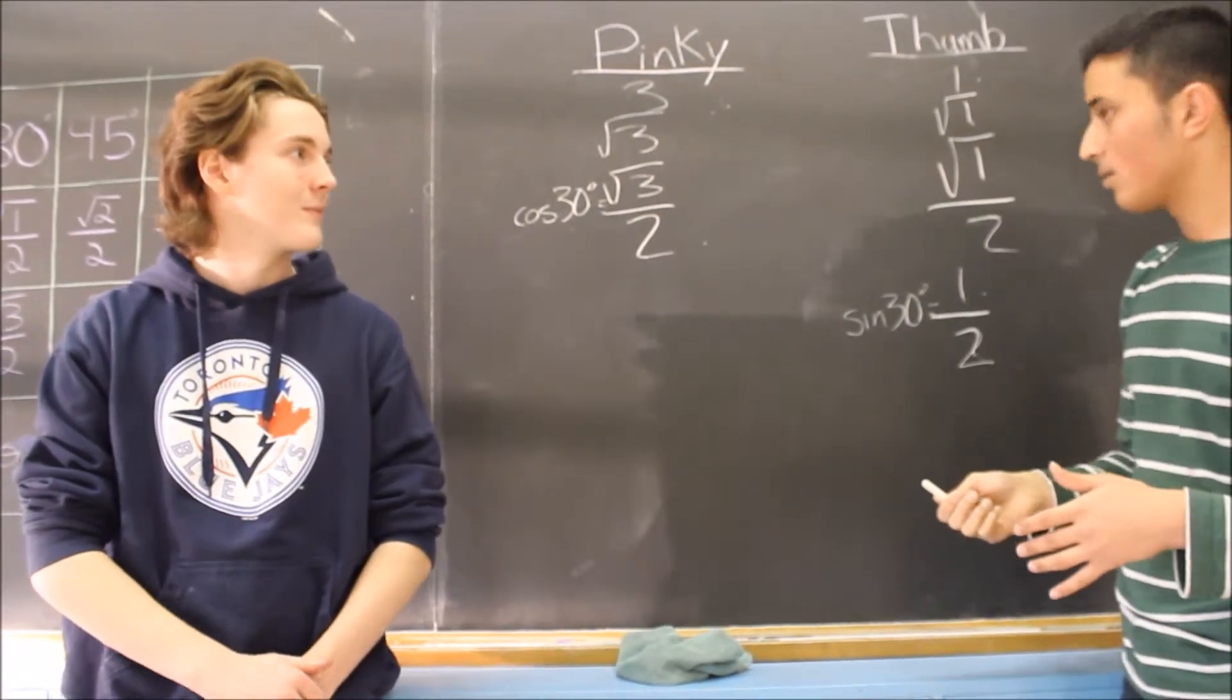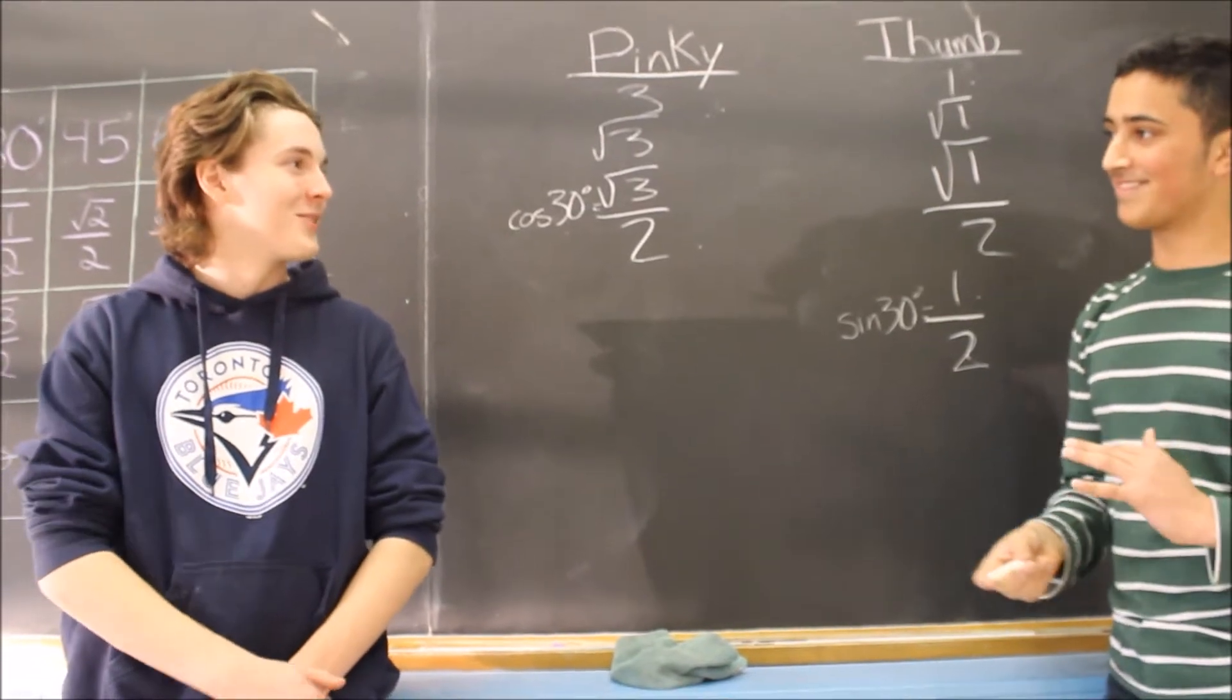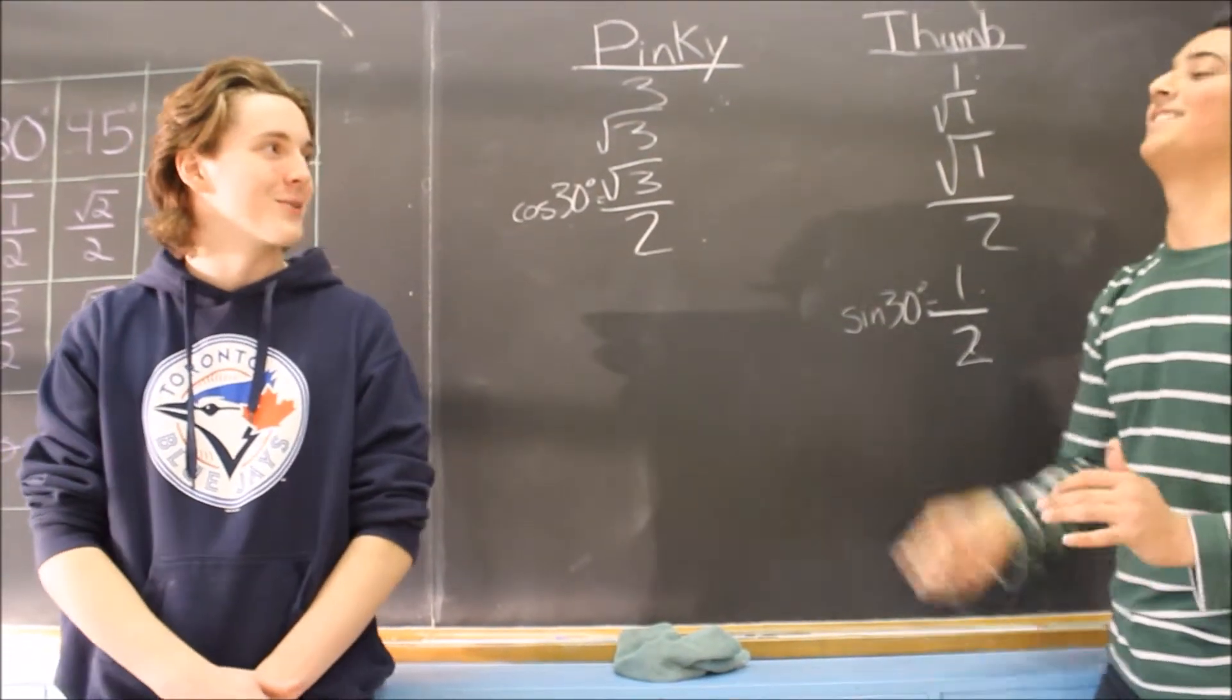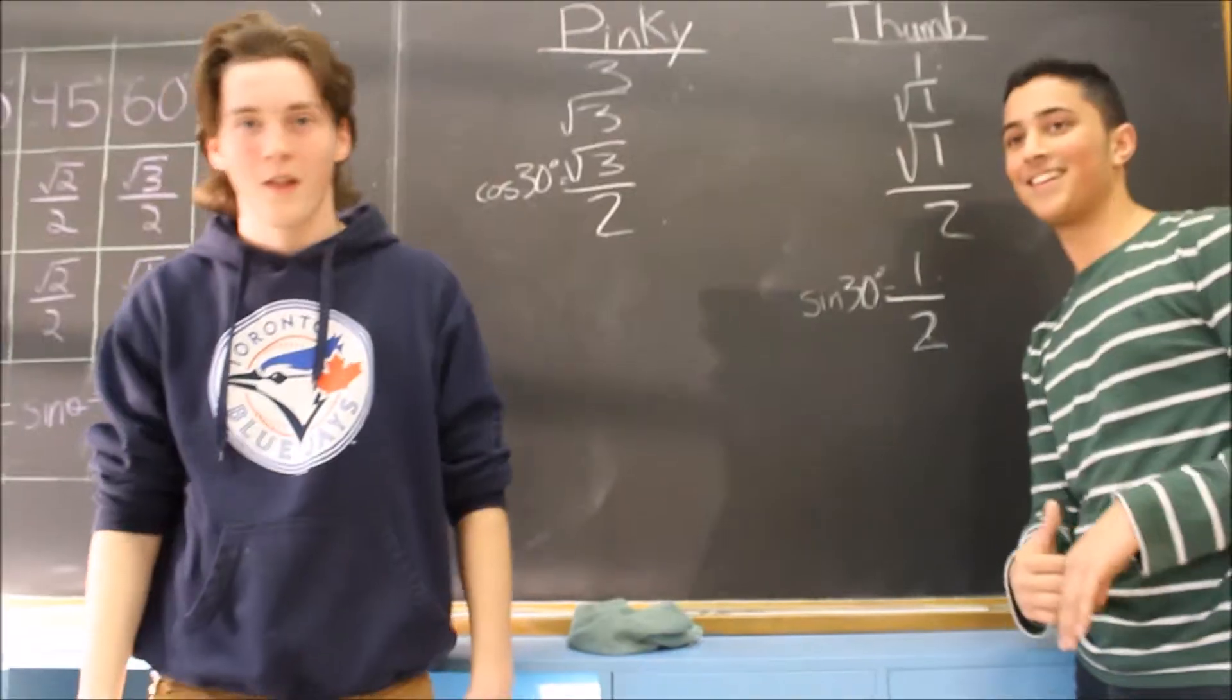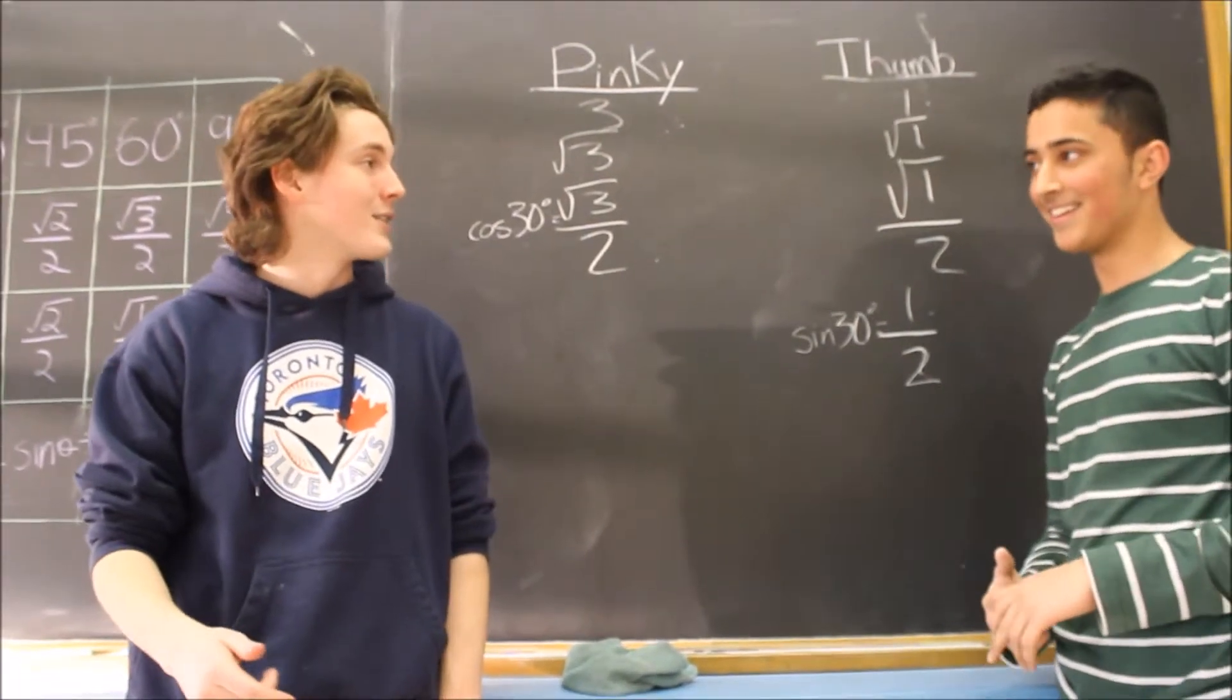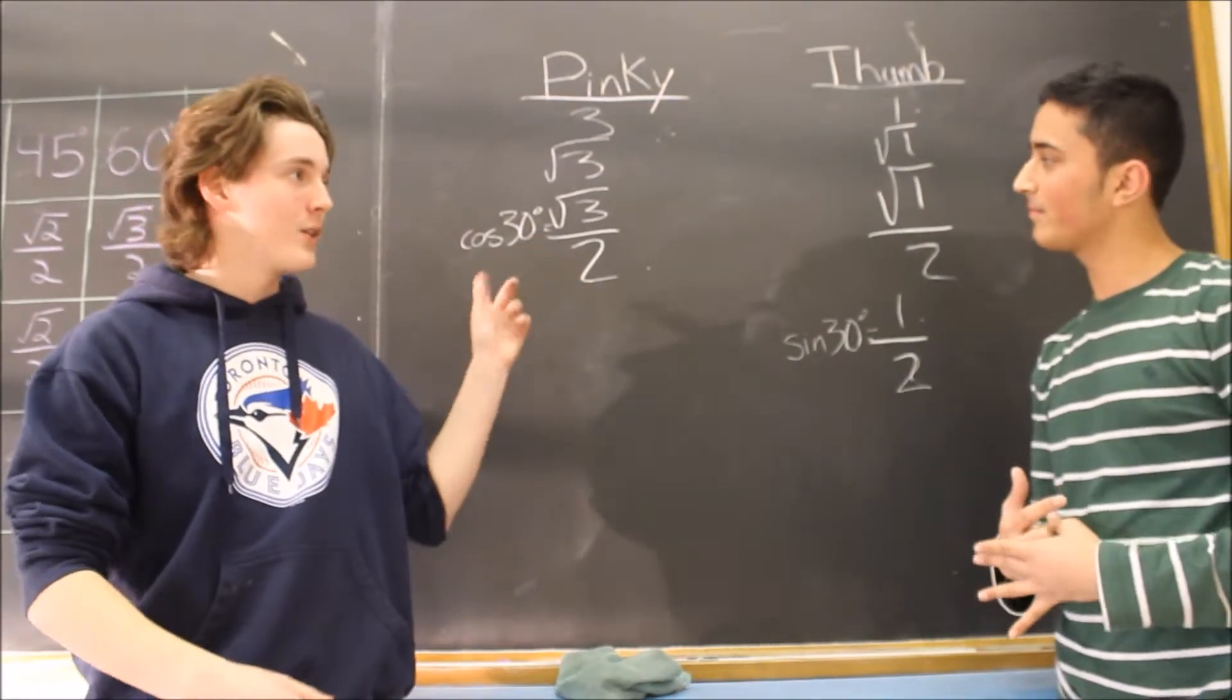Usman, you're forgetting something. Really? Am I, Connor? You silly goose, you forgot to tell them which side is sine and which side is cos. Gee whiz, Connor, I did. The value from the thumb side is going to represent the sine value, and the value from the pinky side is going to represent the cos value.